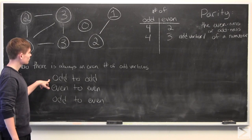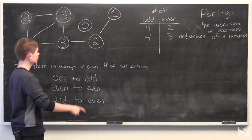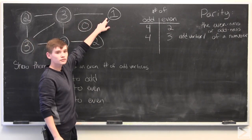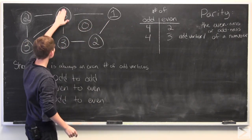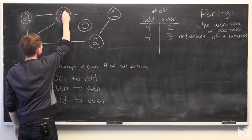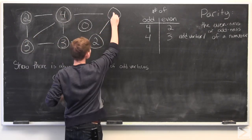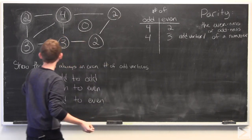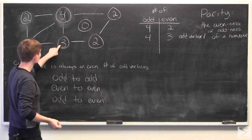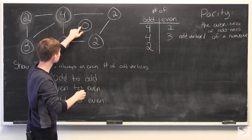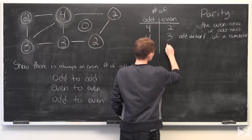So let's start with odd to odd. In this example, if we add an edge from this odd vertex to this odd vertex, this one becomes four. This one becomes two, because there's two edges connected to it. And if we count them, we have two odd vertices and one, two, three, four, five even vertices.